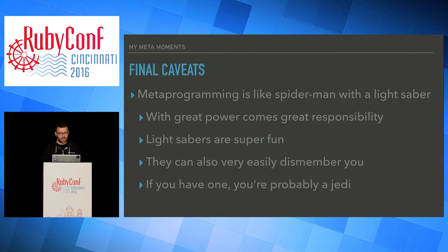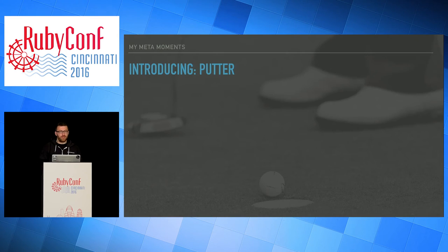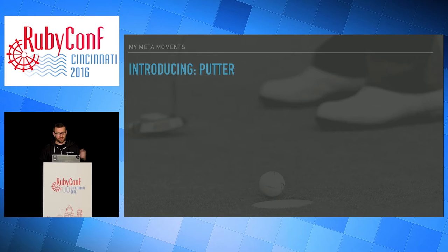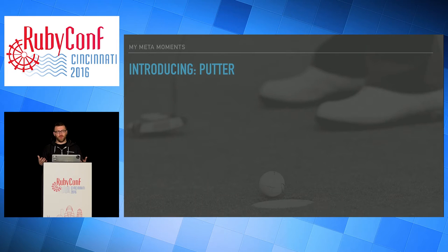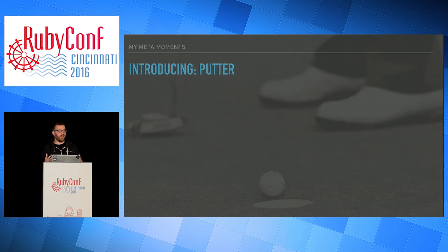With that, I'm going to start by introducing something I call Putter. It's inevitably going to get mispronounced throughout this, so I'm just going to go with it. I'm going to show what the gem does, then all the metaprogramming tools I learned, and then how they got used to build this gem. It's a little bit of shameless self-promotion, but I think it's a lot easier to understand concepts when they're inside of an idea, inside of a set of code, as opposed to just talking about them.